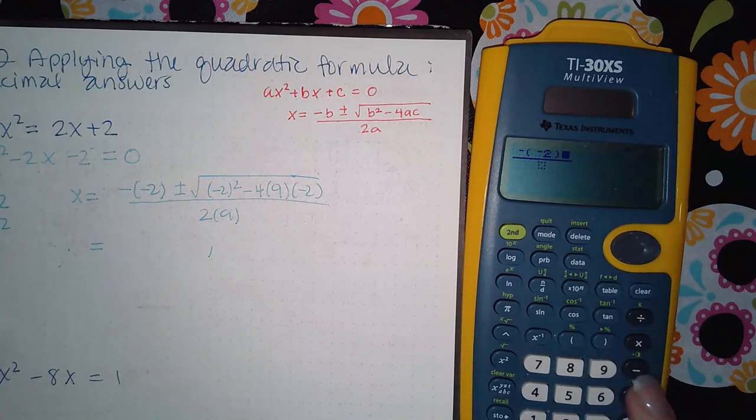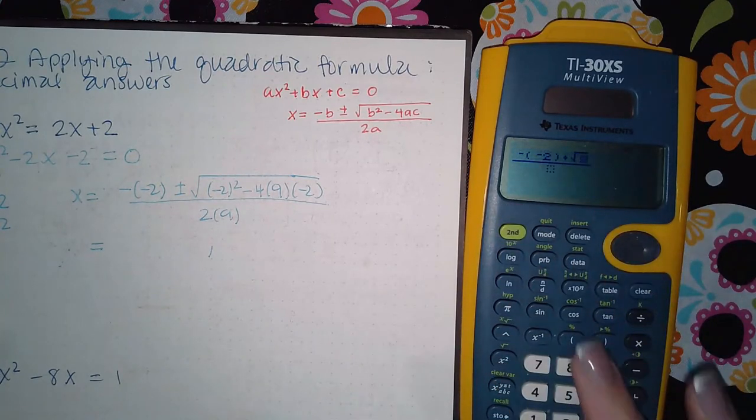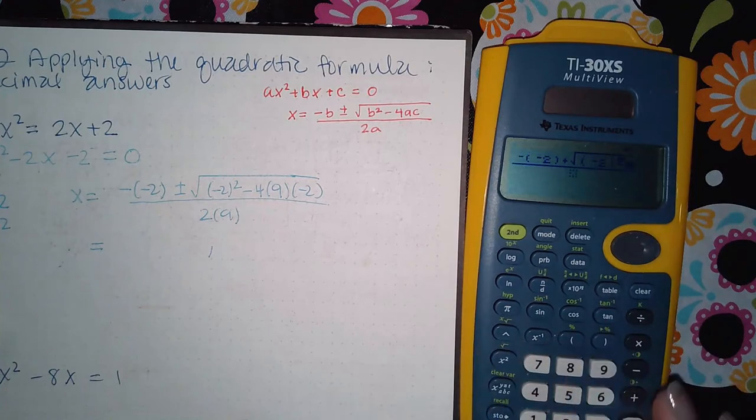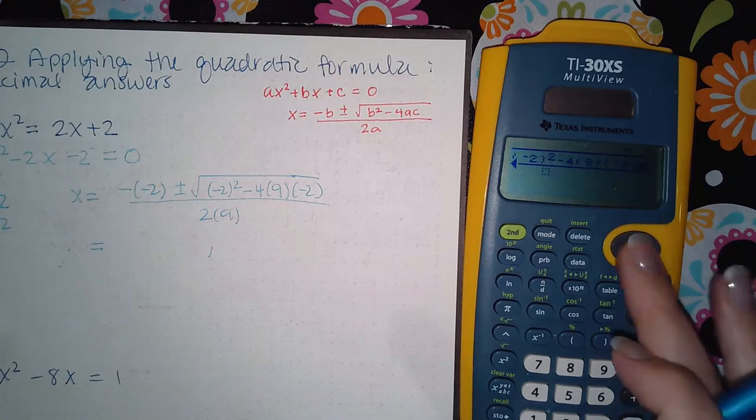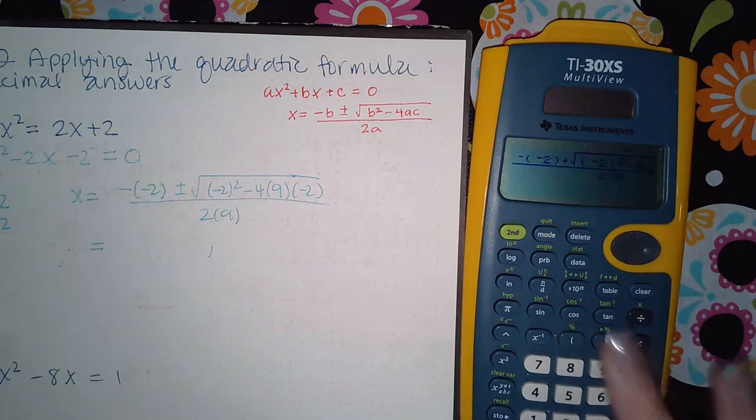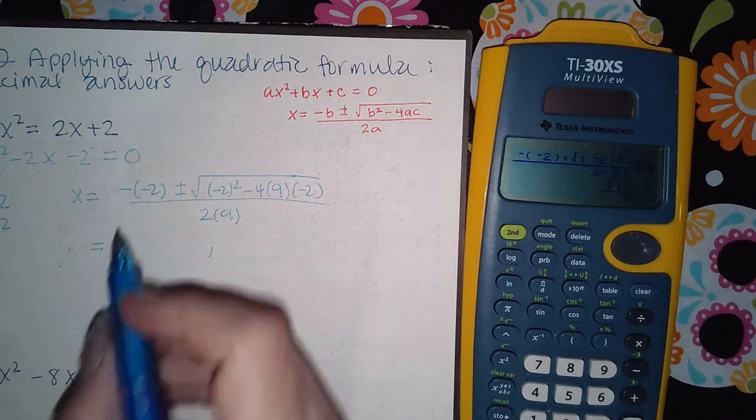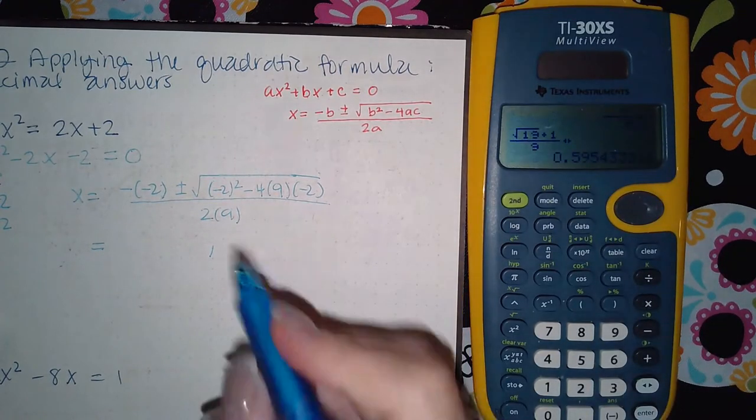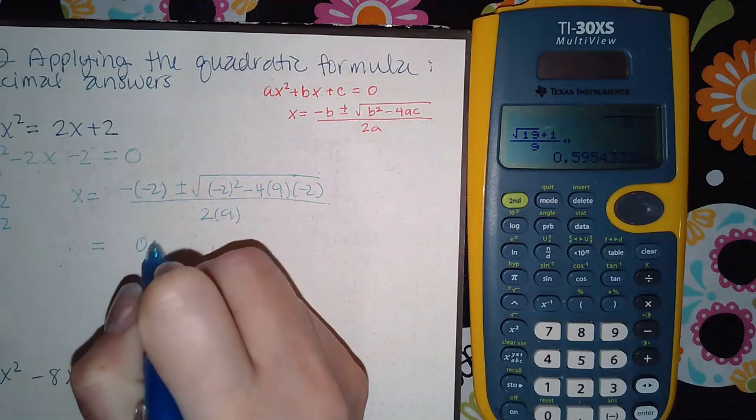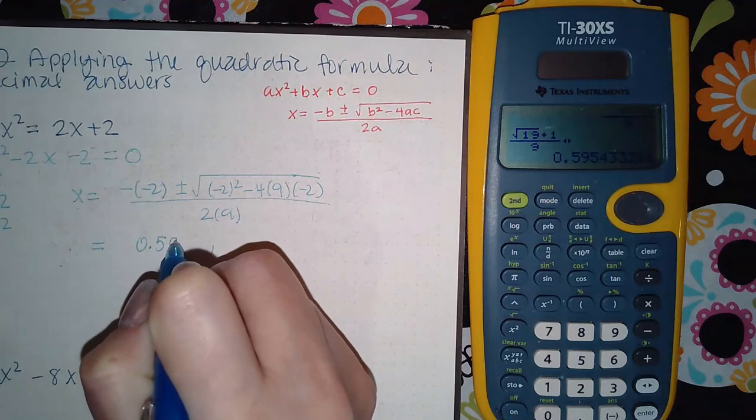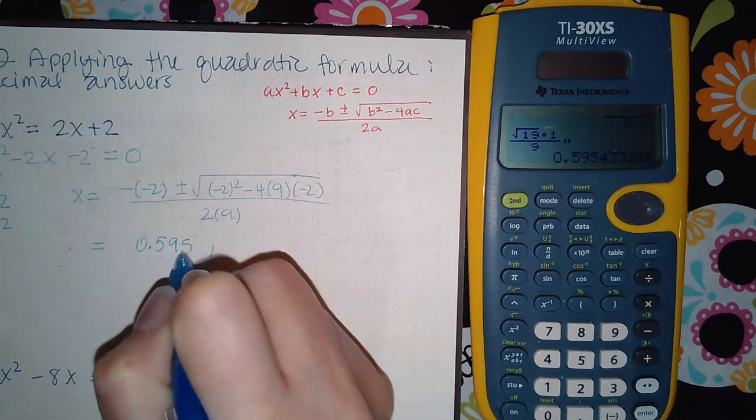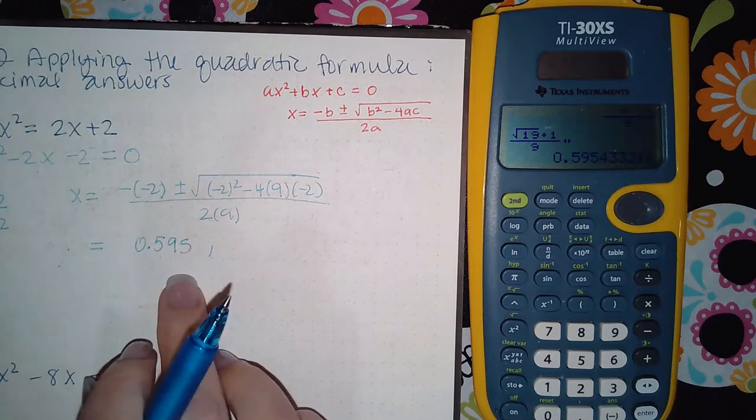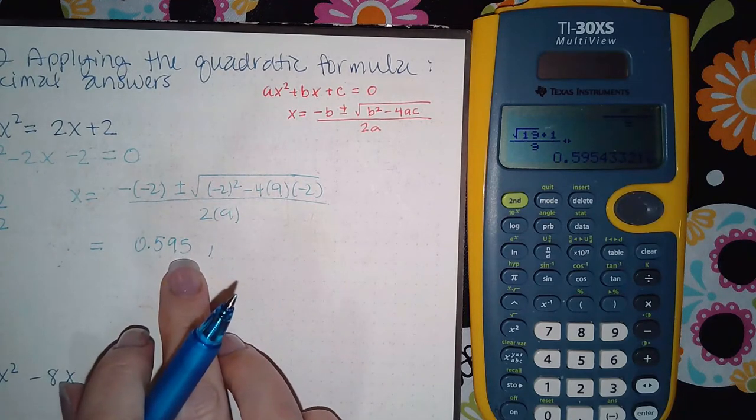So negative of negative 2 plus square root of negative 2 squared minus 4 times 9 times negative 2, all over 2 times 9. And the first answer is not a decimal, so let me hit the double arrow and it gives me 0.595. It will tell you how many decimals to round to. I'm going to go ahead and round to the third decimal place.